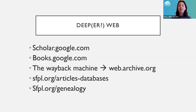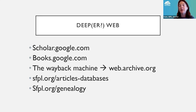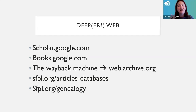Internet Archive is a nonprofit locally based here. If you go to archive.org, you can search the text of scanned books. Also the Wayback Machine — try this after class. web.archive.org takes you to the Wayback Machine, where Internet Archive has periodically captured images of what web pages look like. If I want to know what sfpl.org looked like 10 years ago, I can actually find out. It's super fun to see how websites have changed.